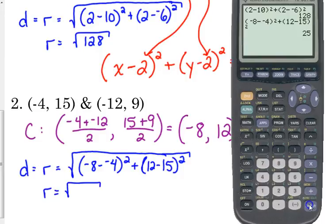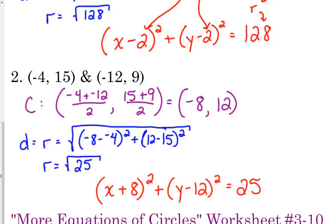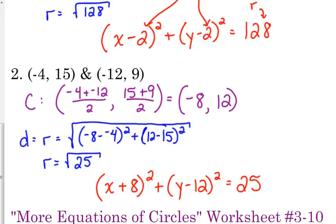So r equals the square root of 25. I do realize that 25 is a perfect square, but I'm turning around and squaring it again, so I'm just going to leave it under the square root. There's no point in taking the square root and then having to square it. So our equation is (x + 8)² plus (y - 12)² equals 25. Because yes, the radius is 5, but you've got to square it when you put it in the equation. Nothing terribly difficult, you've just got to remember all the pieces.